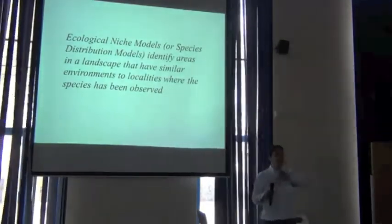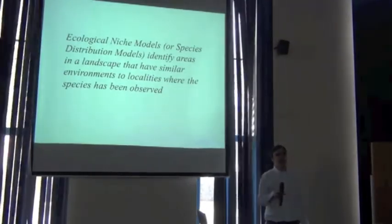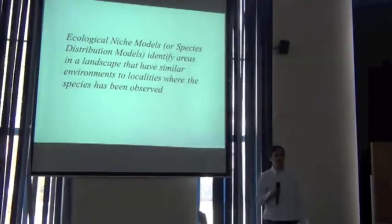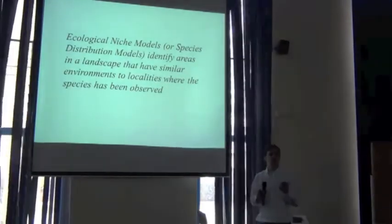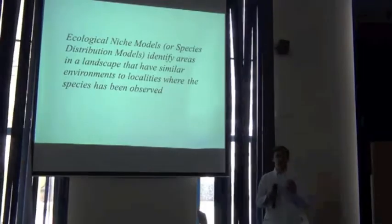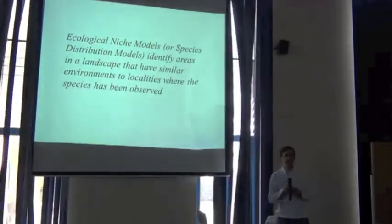These models identify areas in a landscape that have similar environments to where the species or to localities where the species has been observed. And that's a really key point that I want to throw out there, that that is, if you like, all these models can do. They can say, this is where we've found the species, and this is where else in the landscape the environments are similar to where we've already found the species. But the argument we're going to put forward, and I think what we're going to show you during the week, is that that, with caveats, can be extremely useful information.